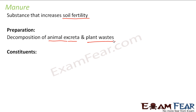What does manure consist of? Since it is made up of animal excreta and plant wastes, it is obvious that it will consist of organic matter, because our body is largely organic and made up of organic compounds. So since it is formed by decomposition of excreta, it has a lot of organic matter and also some nutrients, which it provides to the soil.